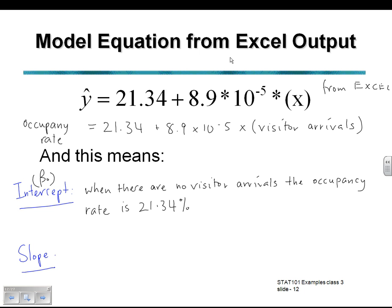Secondly, the slope, beta 1. This means for a one unit increase in visitor arrivals, the occupancy rate increases. Positive slope. So it increases by 0.0000089%.